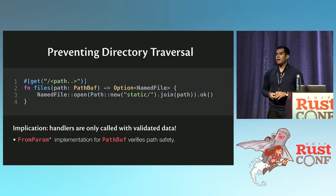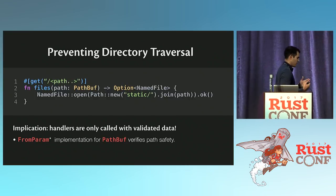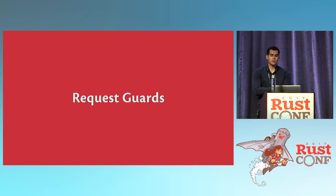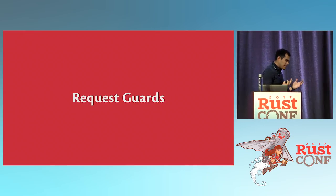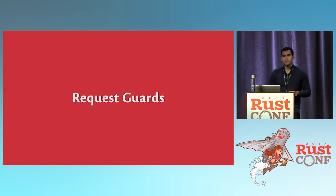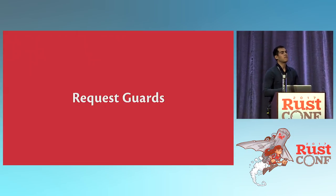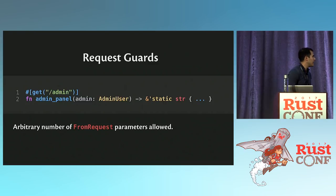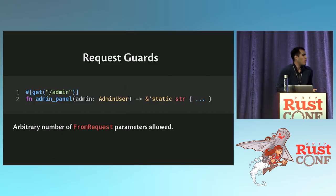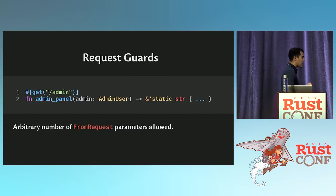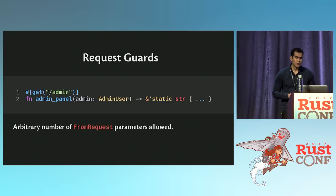The last thing I want to talk about before we discuss how this actually works is what I believe is the most exciting part about Rocket — the concept of request guards. From what we've seen so far, Rocket helps you with input validation, but there's more to it than just the path. There's arbitrary data in the request, and you want to make sure the request contains some information — for instance, that it identifies an admin user. But there's nothing to match in the path for that.